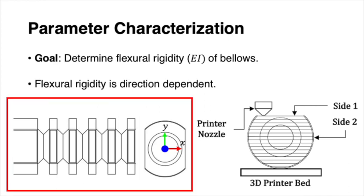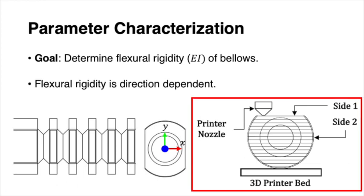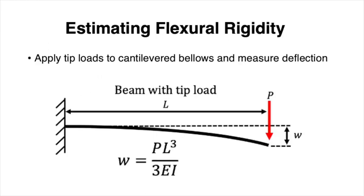For revolute bellows, the second moment of area is different when bending about the y and x axes in the cross section. For helical bellows, the flexural rigidity can vary based on the layer direction of 3D printing. To determine the effective flexural rigidity, we apply a range of tip loads at the distal bellows end and measure the deflection. We then fit the effective flexural rigidity to the small deflection data using the Euler-Bernoulli tip deflection equation.